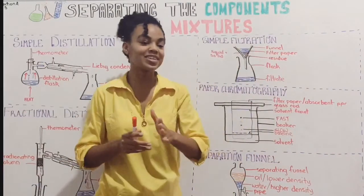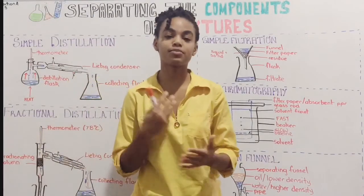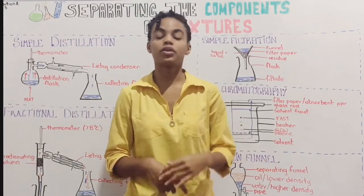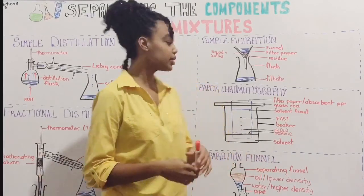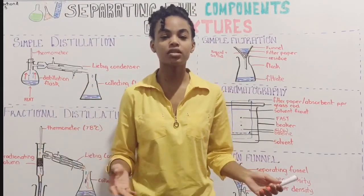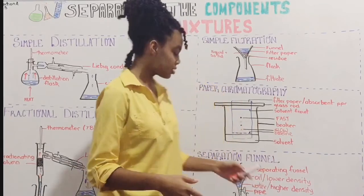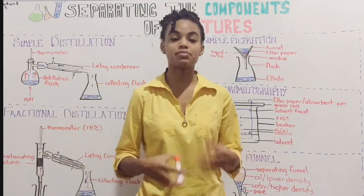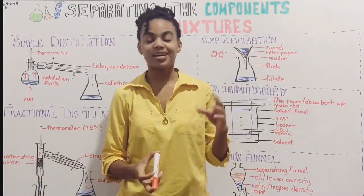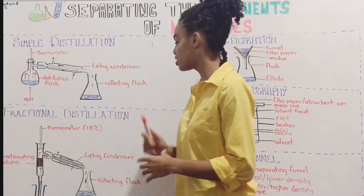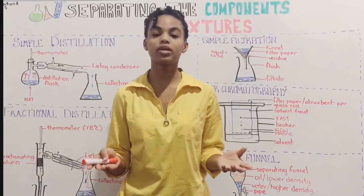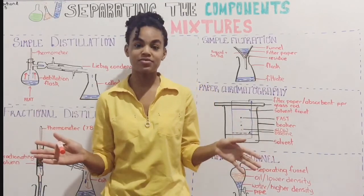So what did we learn today? In simple filtration, we use this method to separate solid and liquid suspensions where the solid does not dissolve in the liquid. Paper chromatography is used to separate several solutes that are in a solution — usually of different colors. Separating funnels are used to separate immiscible liquids. Simple distillation is used to collect a solvent from a solid-liquid solution. And fractional distillation is used to separate two miscible liquids that have similar boiling points. Alright, so that wraps up this video, guys.